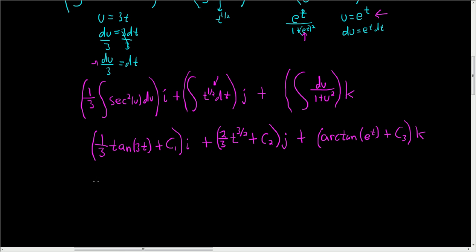To finish, we can write the final answer as follows. This is 1 third tangent 3t i plus 2 thirds t to the 3 halves j plus the arc tan of e to the 3t. E to the t, sorry.